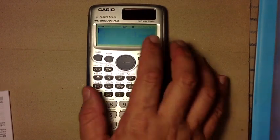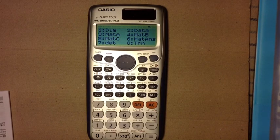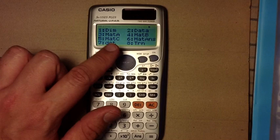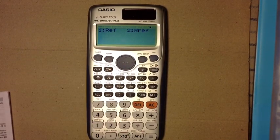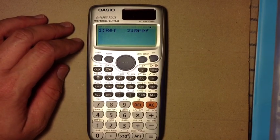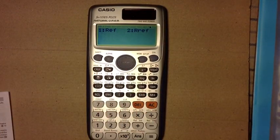Okay, clear it. If I go shift 4, that will access my matrix operations. You still have your determinant, your transpose. You can still do an inverse.